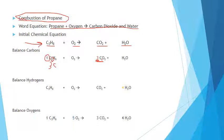Now balance the hydrogens. You have one times eight hydrogens, and what number times two gives four? You put a four there for water. This number — the H2O coefficient — is always going to be half of the hydrogen count for alkanes. Those are the little tricks as you go along. Then finally, balance the oxygens.